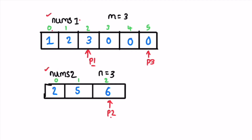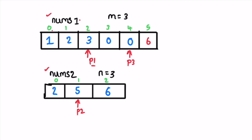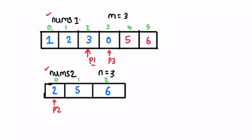We check the greater of the two elements at p1 and p2 and insert the greater element at p3. 6 is greater than 3, so we insert 6 at p3, decrement p2, and decrement p3. Next, 5 is greater than 3, so we add 5 at p3, decrement p2 and p3. Then 3 is greater than 2, so we add the element at p1, decrement p1 and p3.